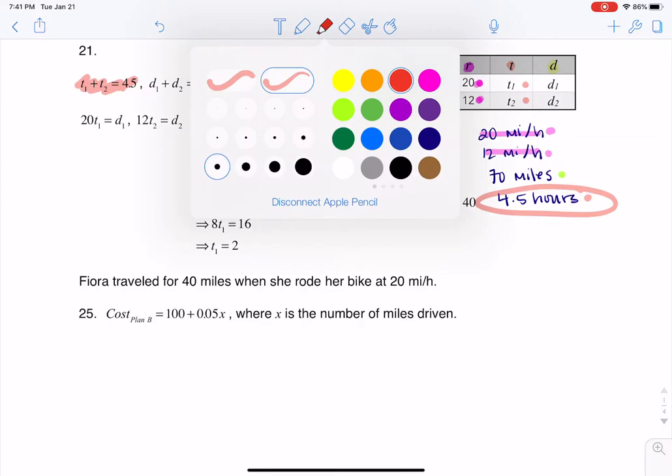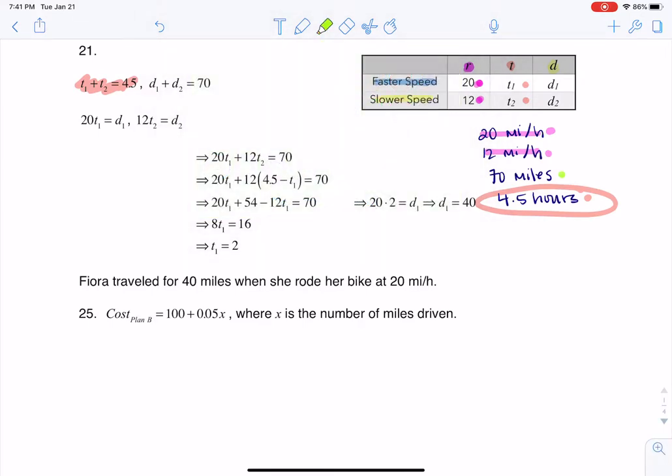In that same vein, they didn't tell us how far she traveled at each of those different speeds, but I do know that these two distances have to total out to 70 miles. That's why you see that equation there. So d1 plus d2 has to equal 70, and t1 plus t2 has to equal 4.5.